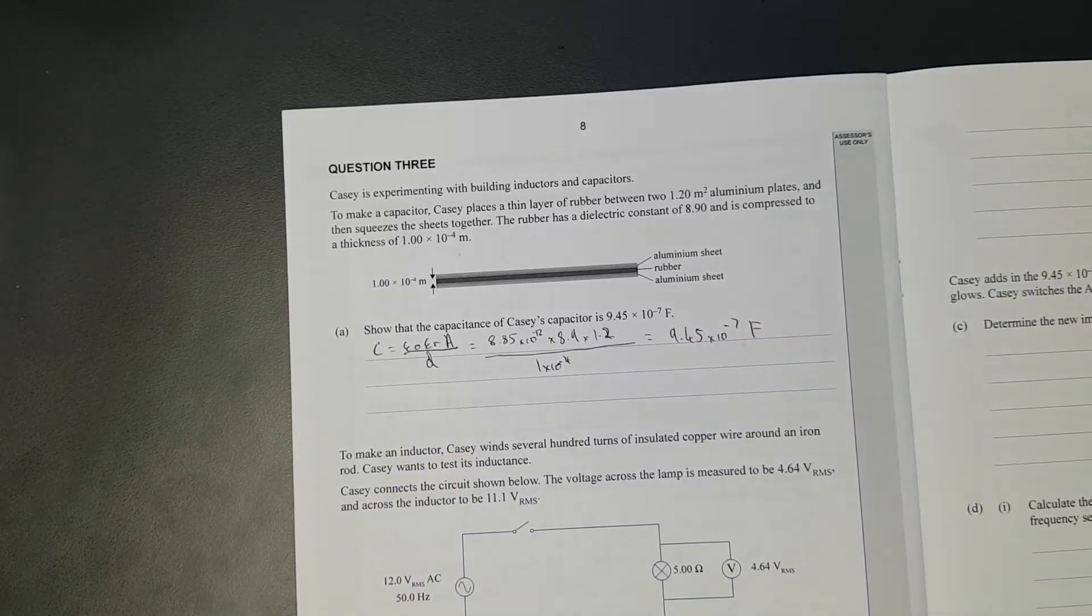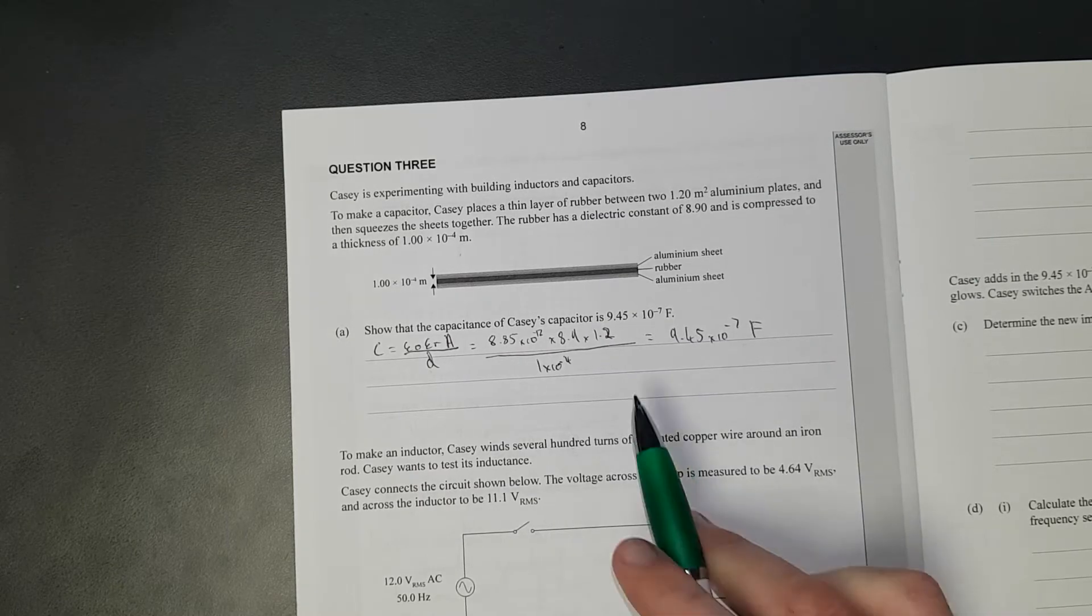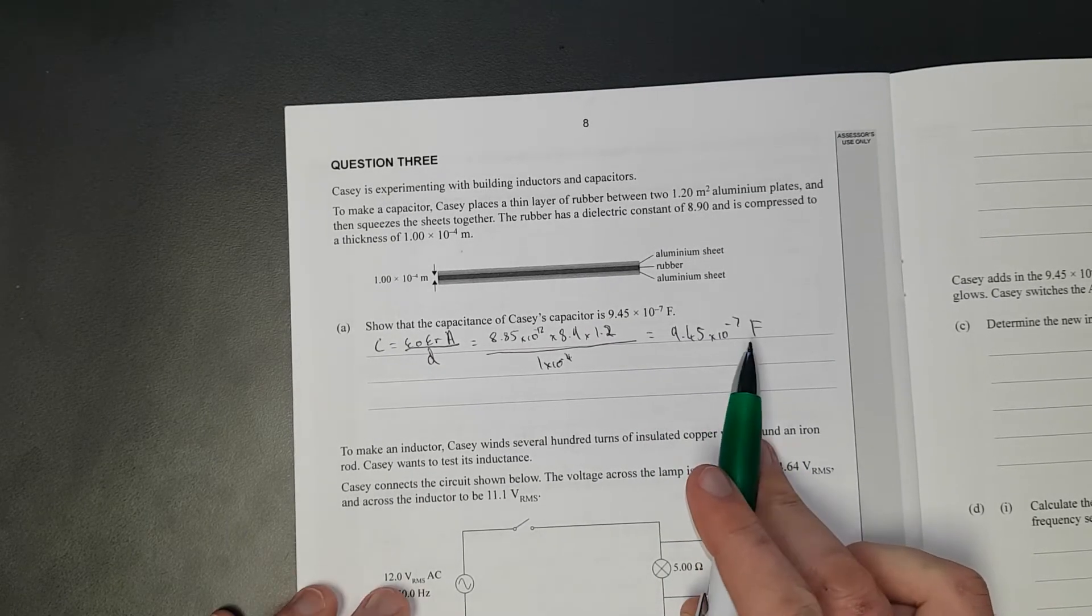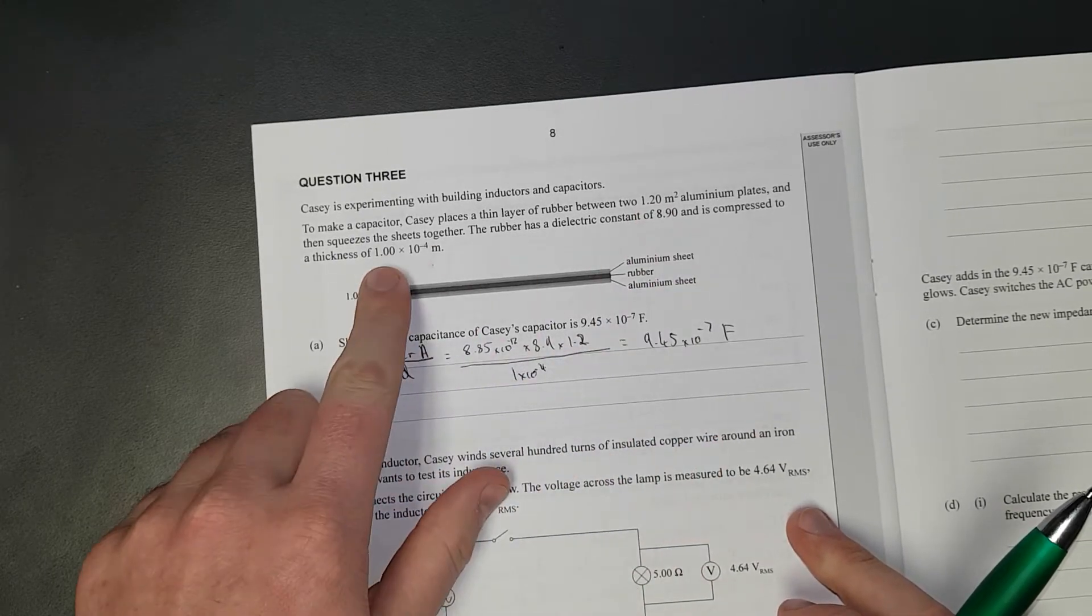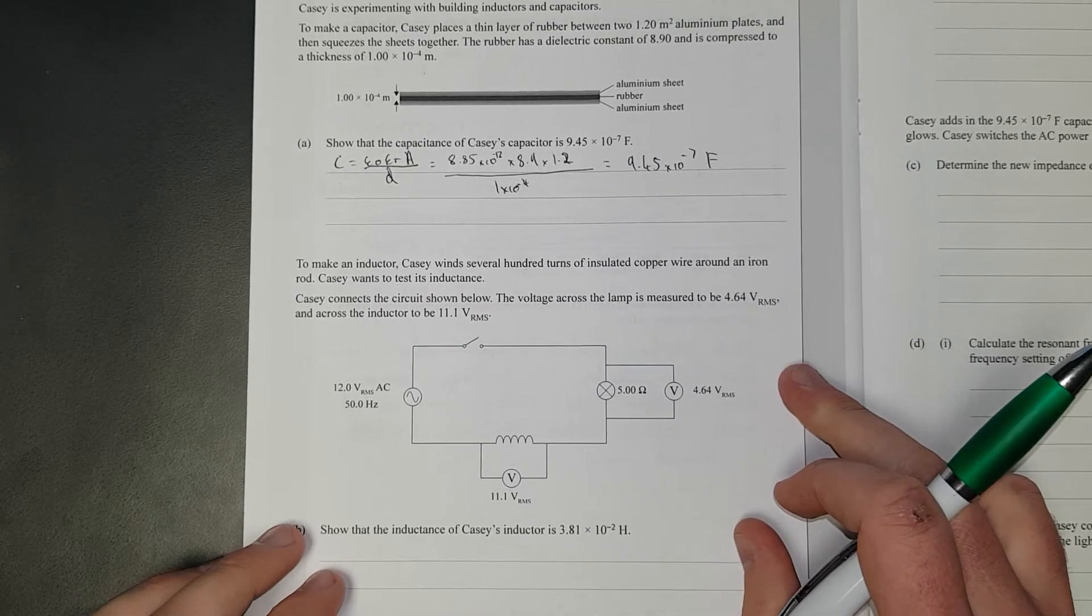If you do it in the calculator it's like 0.000000 whole lot of zeros and then 945. There we go, 3 significant figures just because it's level 3. They will give it in 3.